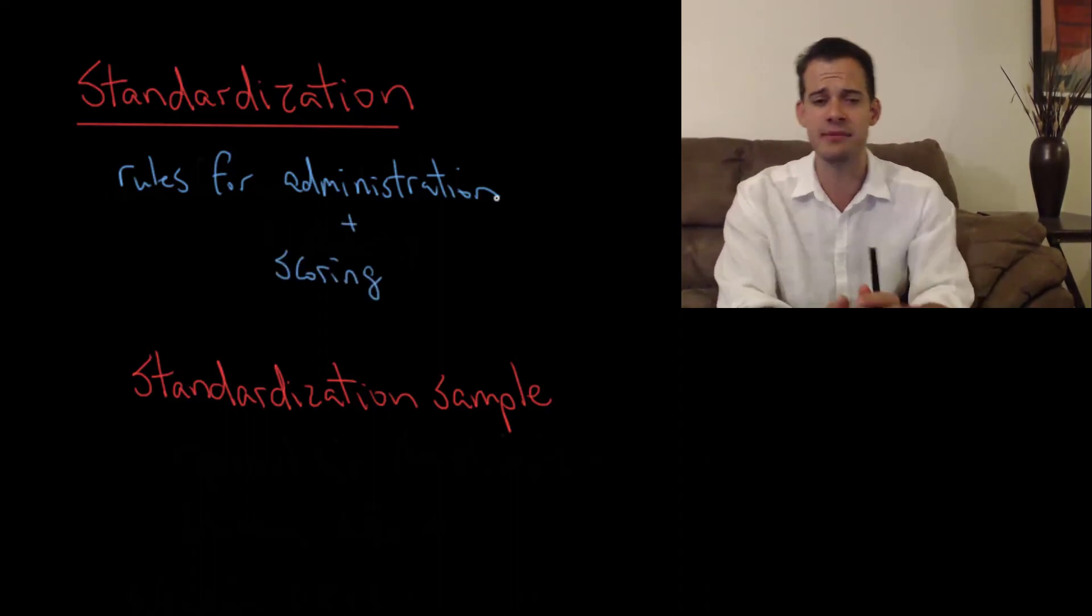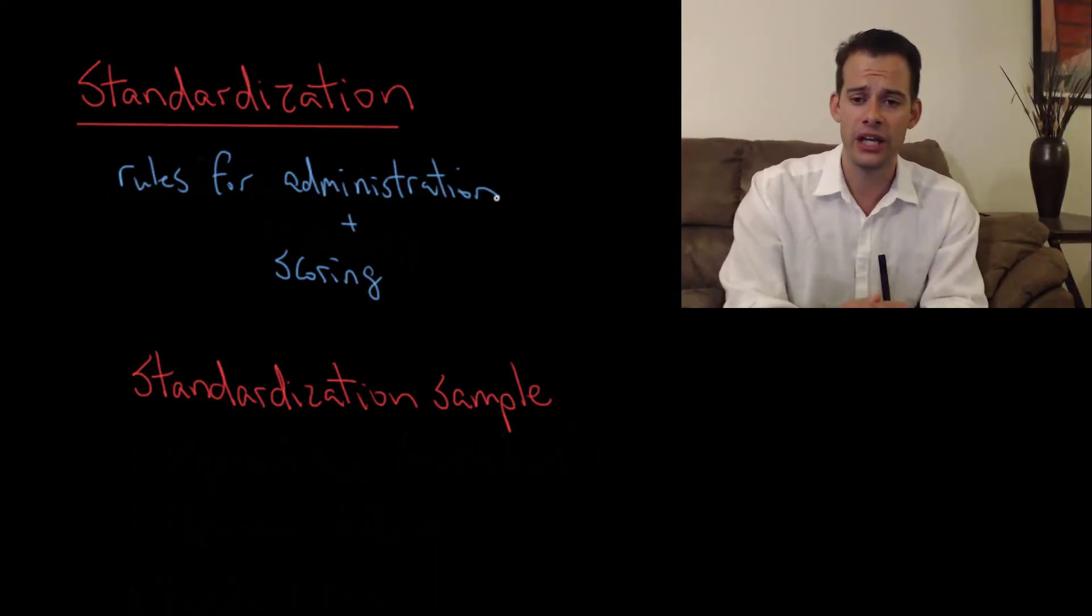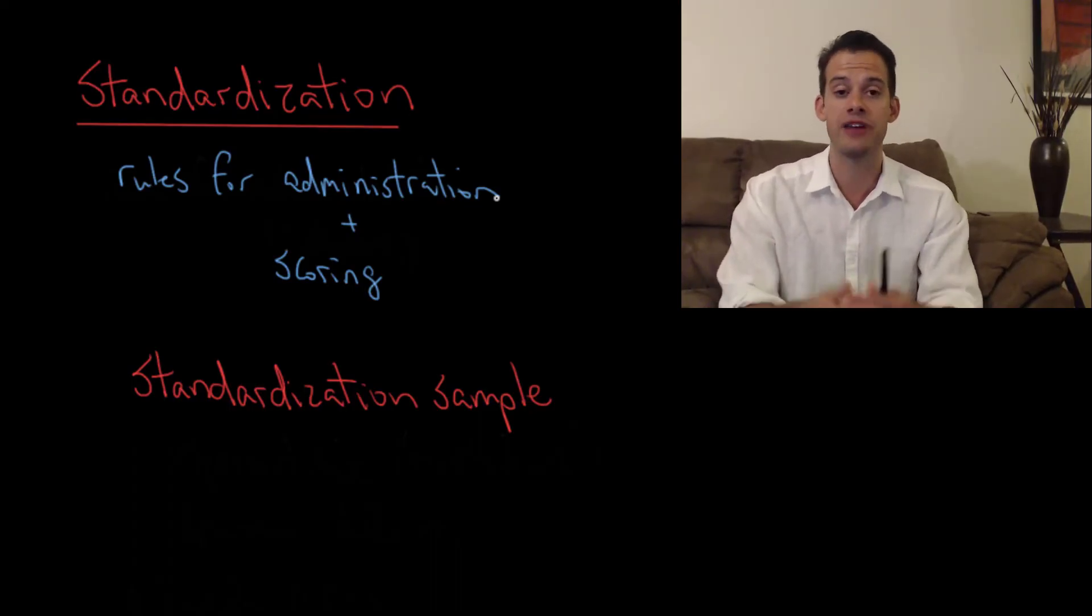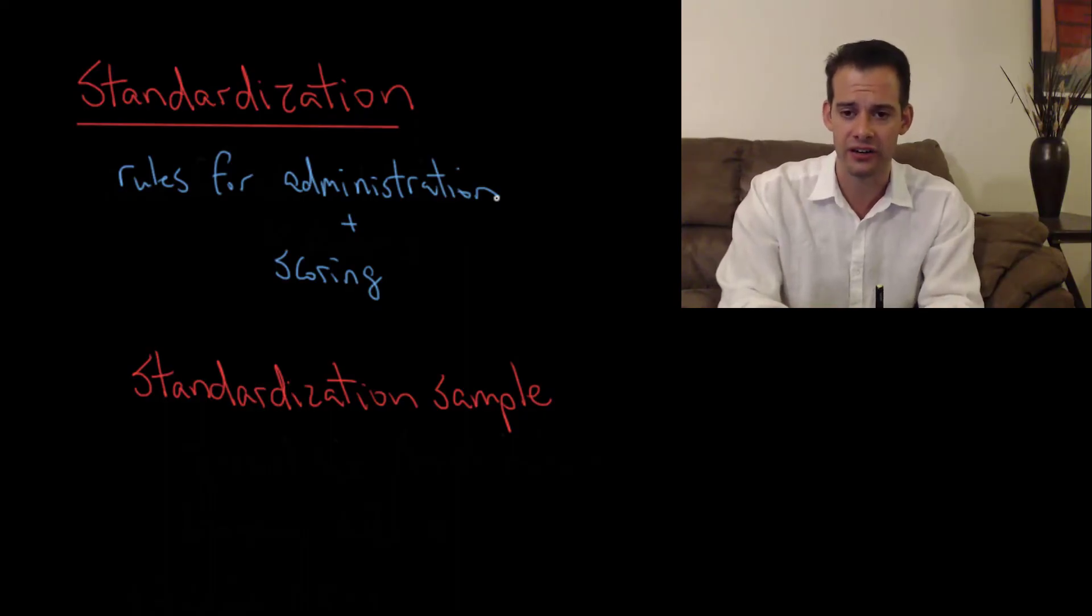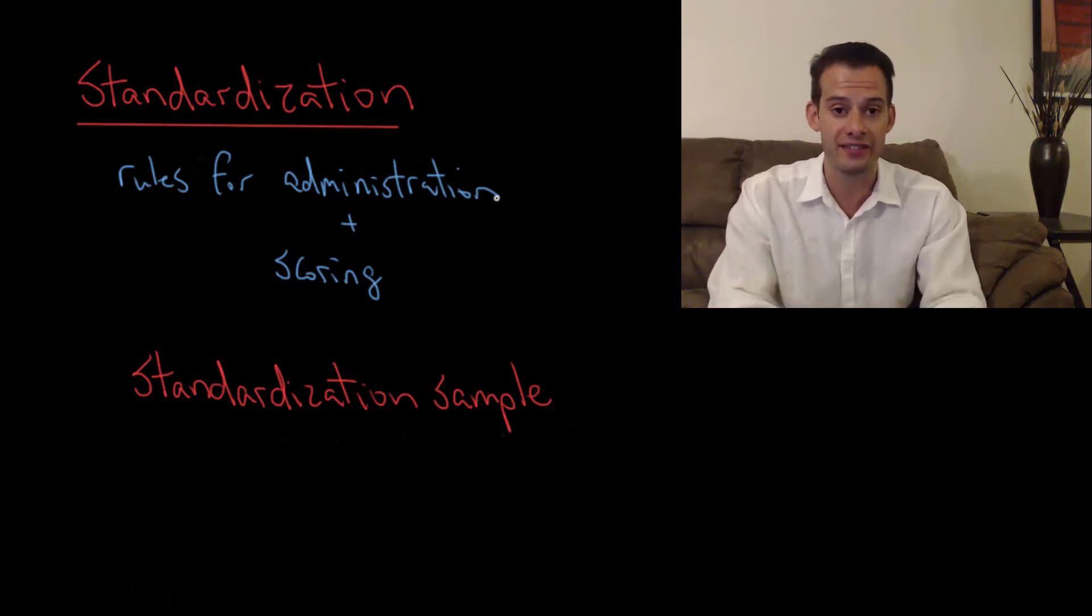So if you've taken the SAT before or you've taken an AP exam you know that there are rules that the proctors have to follow for administering this test. If those rules aren't followed then the exams don't get scored. So if an examiner decided hey you can all have ten more minutes to work on this section then that would be a big problem because that would be violating the rules and that would mean that the test is no longer standardized.